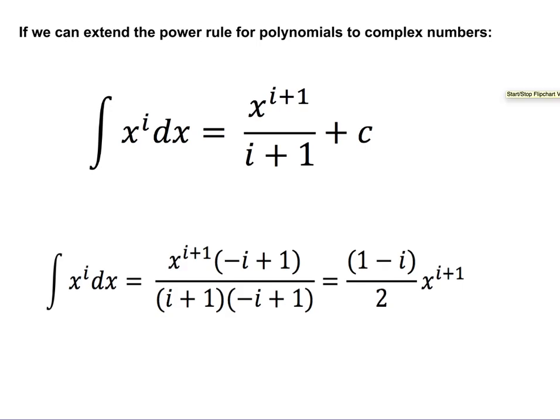First off, if you think about this at all, you might think that one possibility would be that it follows the same rule as for normal power. For example, x to the i, we just increase the power by 1 and divide by the new power. So my guess might be it's going to be x to the i plus 1 divided by i plus 1 plus c. For the remainder of this, I'll kind of ignore the plus c, but we'll stick it back in at the end.